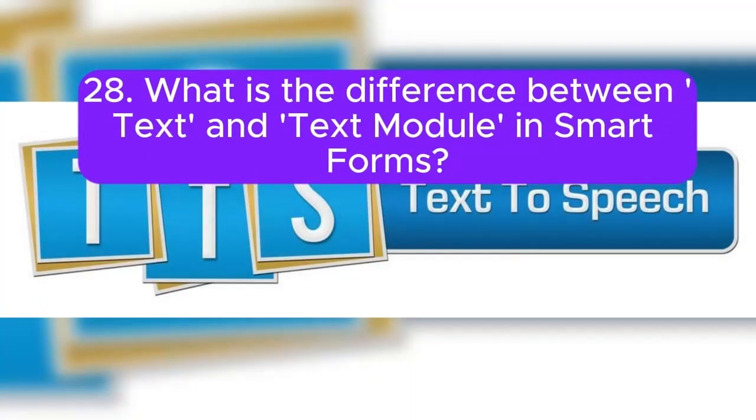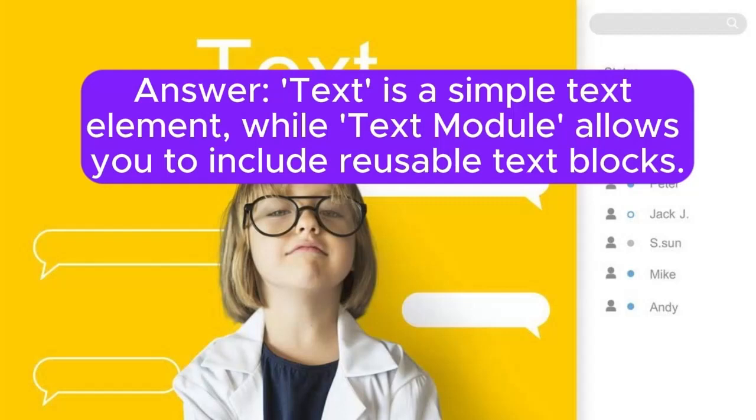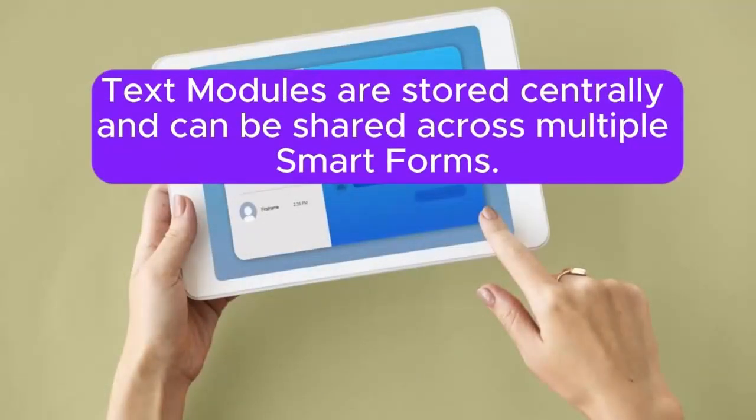28. What is the difference between text and text module in SmartForms? Answer: Text is a simple text element, while text module allows you to include reusable text blocks. Text modules are stored centrally and can be shared across multiple SmartForms.